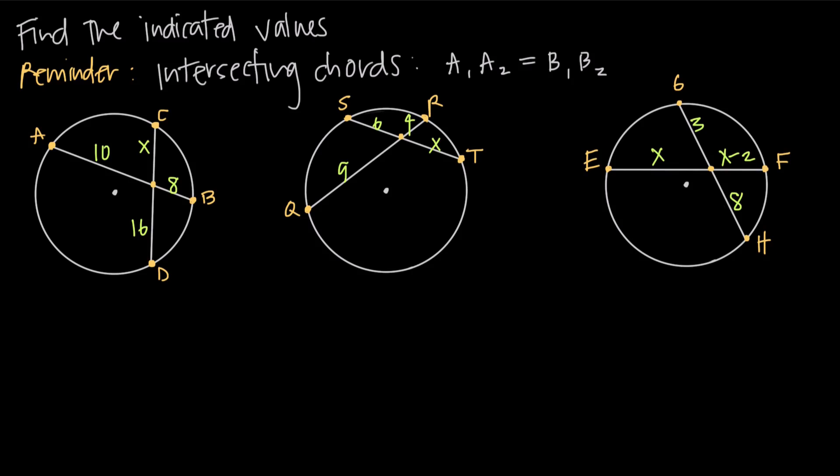In this video we're talking about the interesting thing that happens when two chords intersect one another inside a circle. So if we look at this first figure here we have a circle and we have two chords in the circle. Remember that a chord is basically just a line segment that's inside of the circle that has its endpoints on the perimeter of the circle.